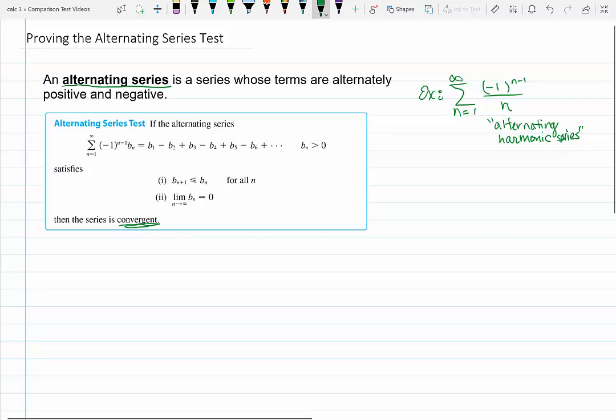So I'd like to go over the proof. The idea is we consider the B sub n's to be a positive sequence of numbers and the negative 1 to the n minus 1 is what we're multiplying by to make it alternate.